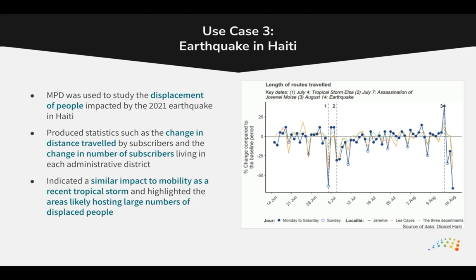Mobile phone data was also used to study the displacement of people after the 2021 earthquake in Haiti, including identifying areas where substantial numbers of people had been displaced from and to. Mobile phone data here was used to calculate the change in distance travelled by subscribers in affected areas, and the change in the number of subscribers living in impacted administrative districts.